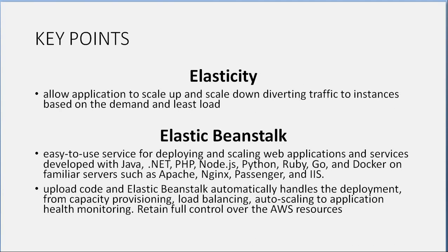Key points — Elasticity: allows applications to scale up and down, diverting traffic to instances based on demand and least load. Elastic Beanstalk is an easy-to-use service for deploying and scaling web applications and services developed with Java, .NET, PHP, Node.js, Python, Ruby, Go, and Docker on servers such as Apache, Nginx, Passenger, and IIS. Upload code and Elastic Beanstalk automatically handles deployment from capacity provisioning, load balancing, and auto scaling to application health monitoring, while retaining full control over AWS resources.